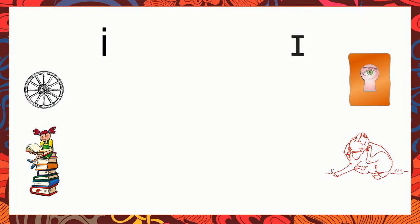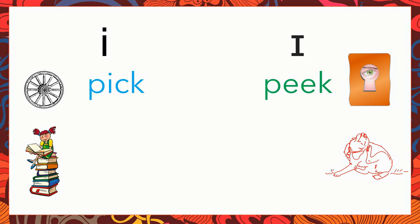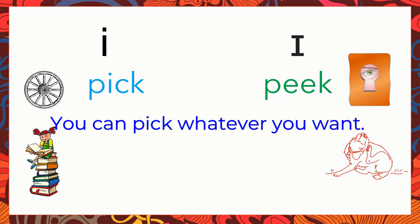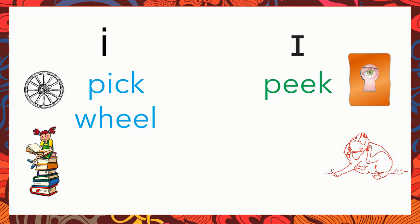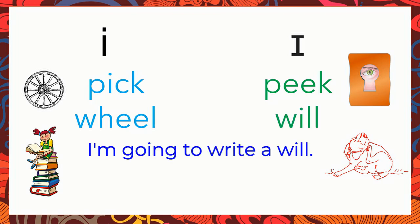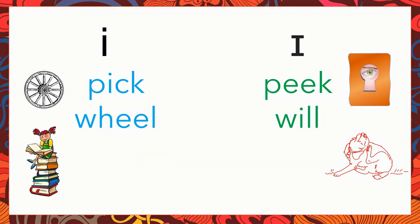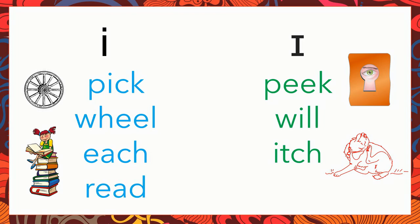I can't stress enough how important it is to clearly pronounce the E and the I sounds, because a lot of people will misunderstand you if you mispronounce a word. So let's go through the commonly confusing words. You have pick and peek. So you don't say, oh, you can peek whatever you want — you have to say pick. You have wheel and will — you don't say I'm going to write a wheel, you meant will. Next is each and itch. Read, rid.